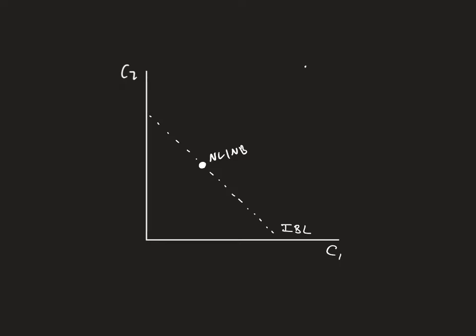If the thing we're going to say is that the economic agent cannot borrow against future income and future wealth — they cannot borrow against it. Well, what do we know? We know at the no lending, no borrowing point, this is Y1 plus W1, and this is Y2 plus W2. And remember that any point above this — if I want to consume more than current resources — I would have to borrow.